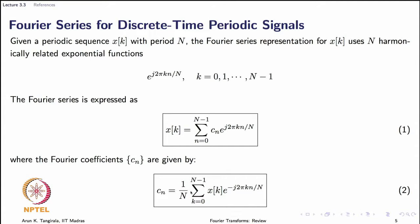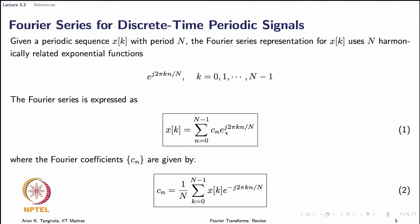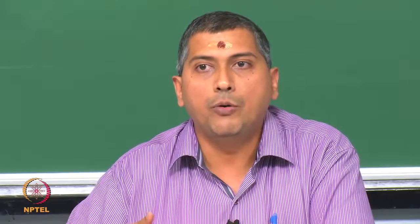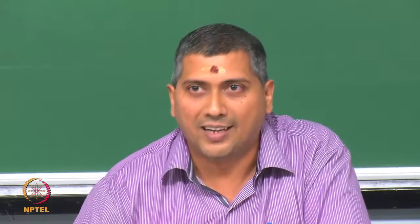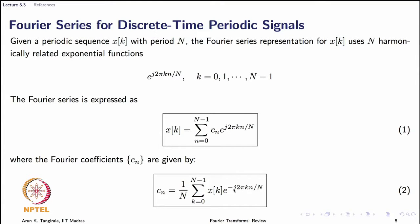One thing to notice is the strong similarity between the synthesis and analysis equations. They look very alike, with two key differences: there is a factor of 1/N in front of the summation for c_n, and e^{j} is replaced by its complex conjugate. This gives a practical advantage — when computing Fourier coefficients or recovering the signal, you only need to write one piece of code, just switching the sign of j and applying the factor 1/N. In some textbooks, 1/√N is used in both equations to make the symmetry even more explicit.